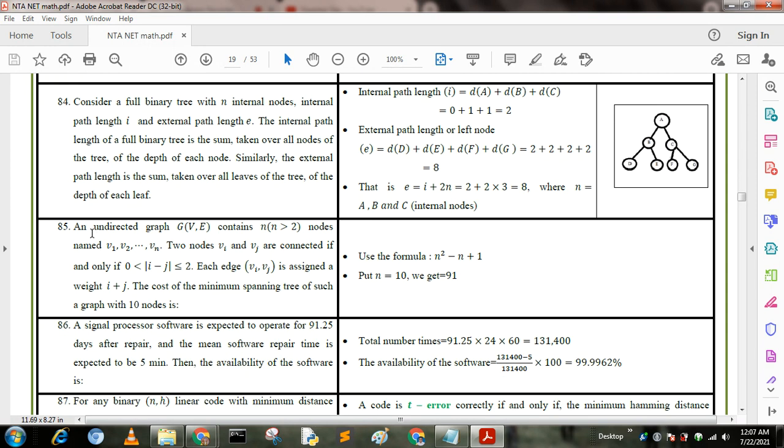Next question: an undirected graph G(V) contains n greater than 2 nodes named v1, v2 dotted vn. Two nodes vi, vj are connected if and only if 0 less than mod of i minus j is less than or equal to 2. Each edge vi, vj is assigned a weight i plus j. The cost of the minimum spanning tree of such a graph with 10 nodes is: we use the formula n square minus n plus 1. For n equals 10, we get 91.